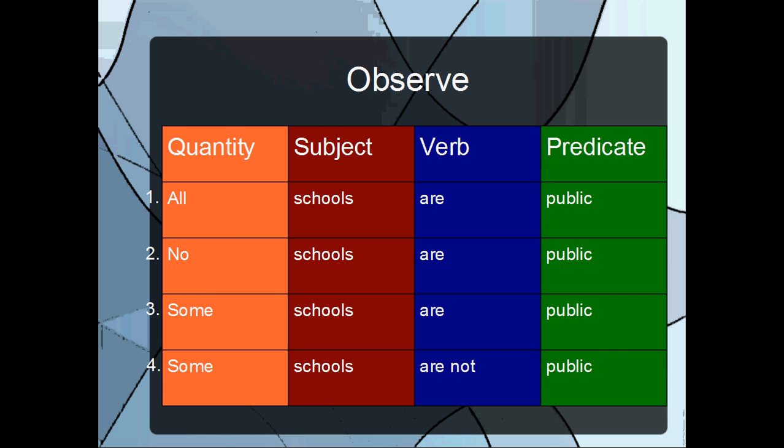Now, because the first and second proposition are either fully affirming or denying the predicate of the subject, both of those propositions would have what's called a universal quantity.